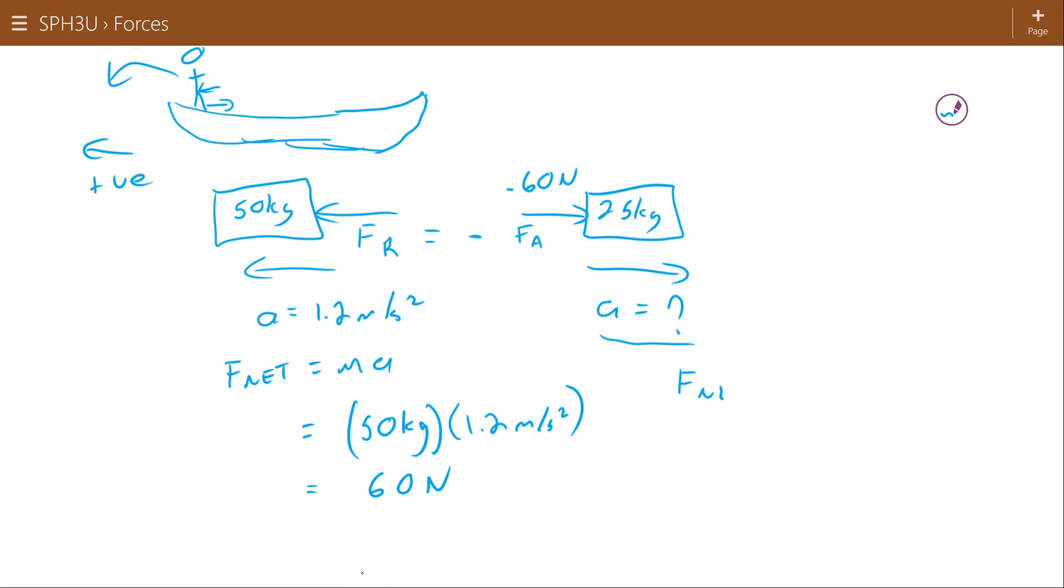So what that means then is that this applied force is going to be negative 60 Newtons. So if my applied force here was the force causing this acceleration, we have a force of gravity and a normal force of both objects but we're considering them to be equal and opposite each other out. You wouldn't actually usually call that a normal force if it's because it's floating on water, you'd call it a buoyancy force. So here the force of gravity and the buoyancy force are canceling each other out.